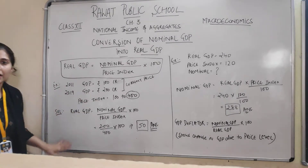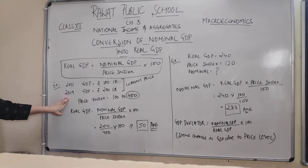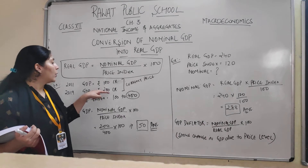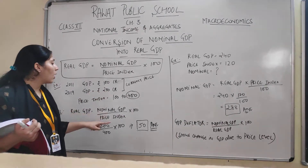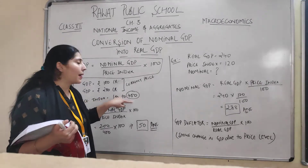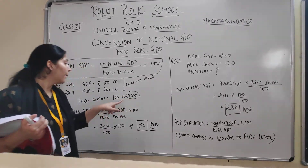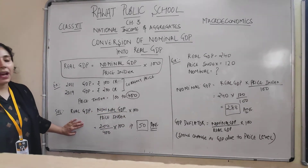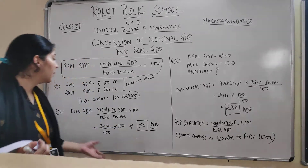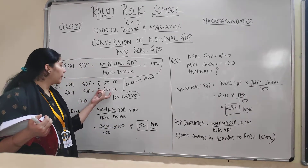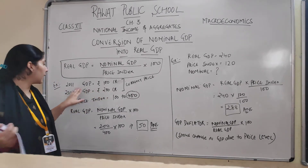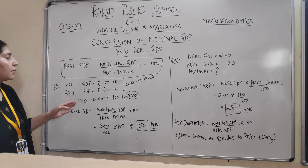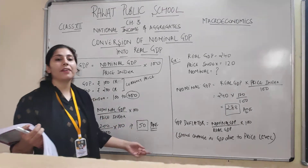Our nominal GDP in 2019, the current year, is 200 crores. We need to find out real GDP. So nominal GDP is 200 crores. We divide it by the price index, which is 400, and multiply by 100. So real GDP equals 200 divided by 400, multiplied by 100, which gives us 50 crores.